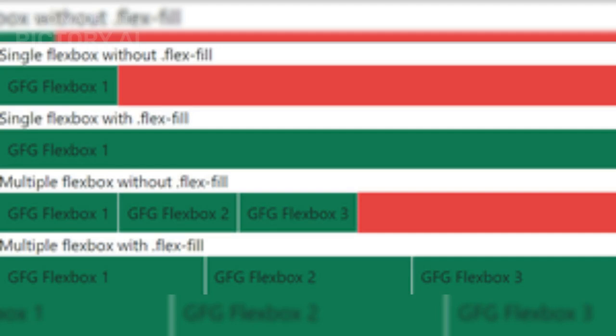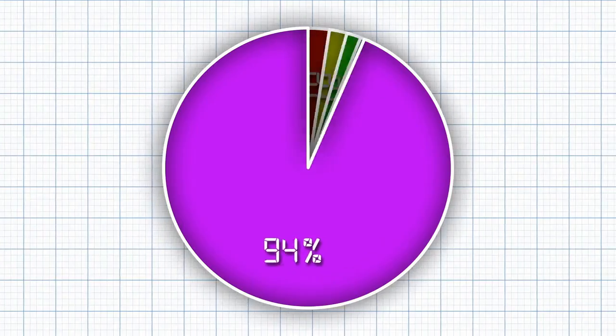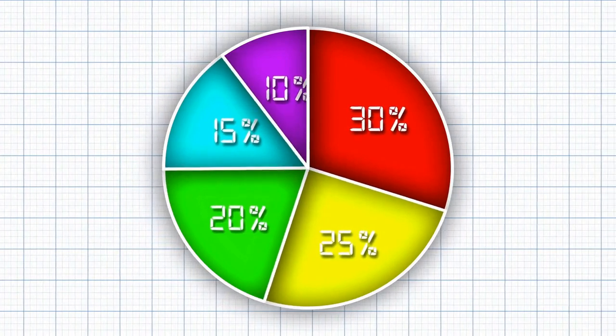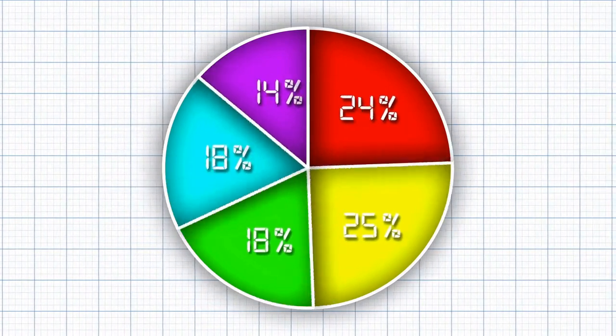Sixth, Grid Template: the blueprint of the grid, which defines the number and size of the grid tracks. Seventh, Grid Template Areas: shorthand for defining the grid areas using named templates. Eighth, Grid Gap: the space between grid tracks, which can be set separately for rows and columns.